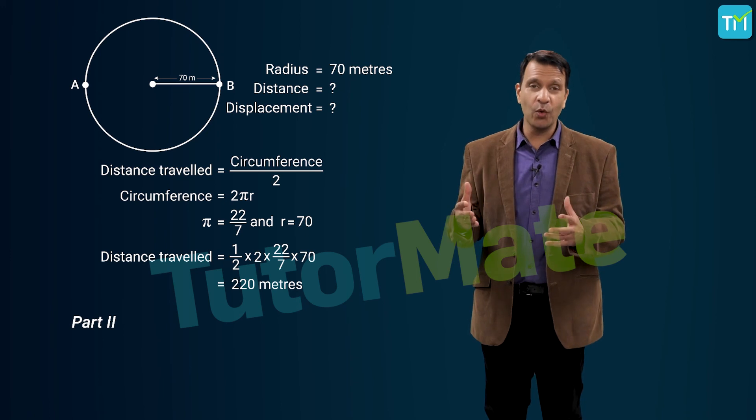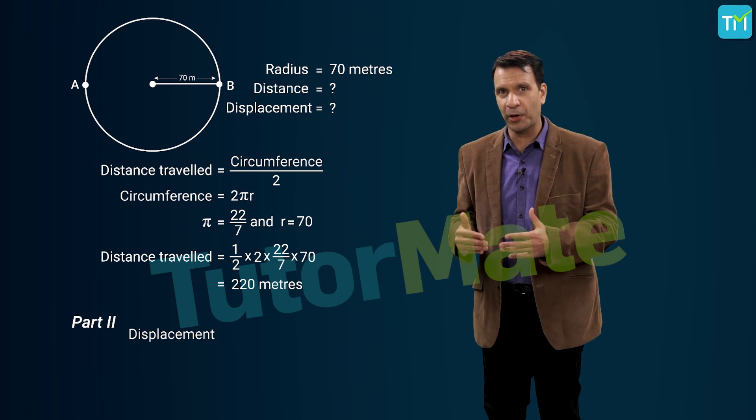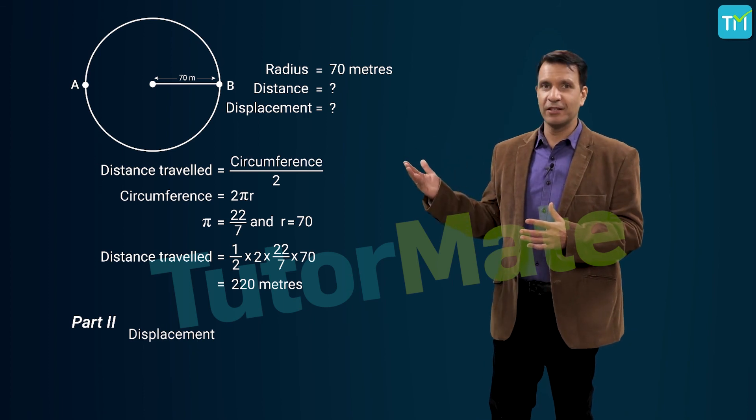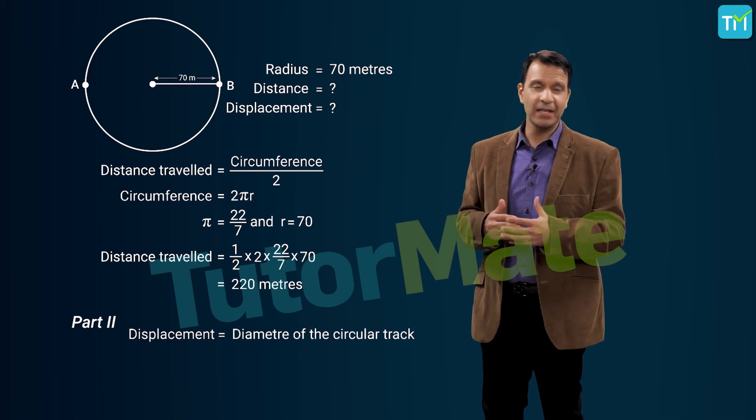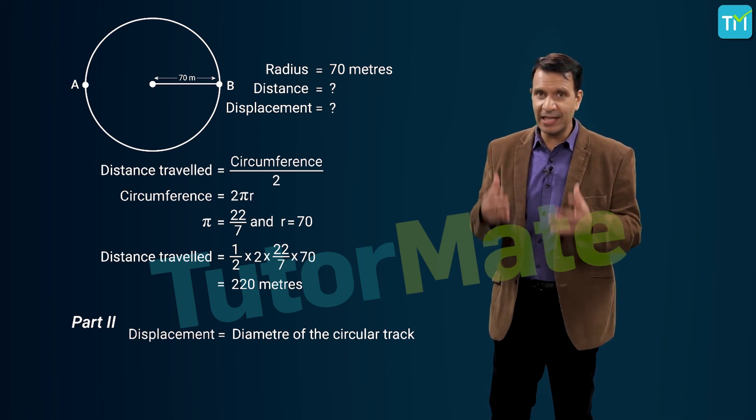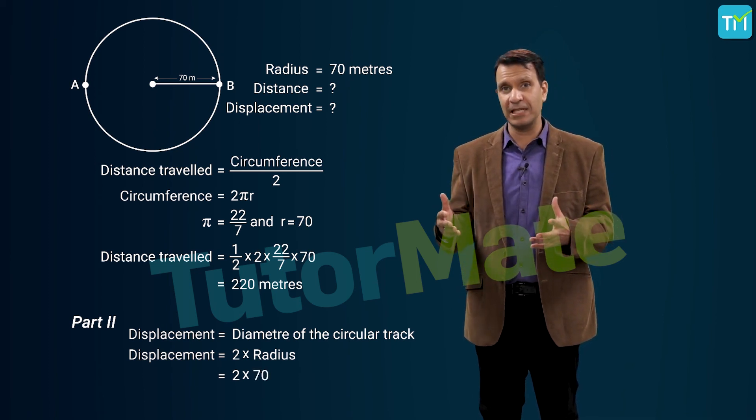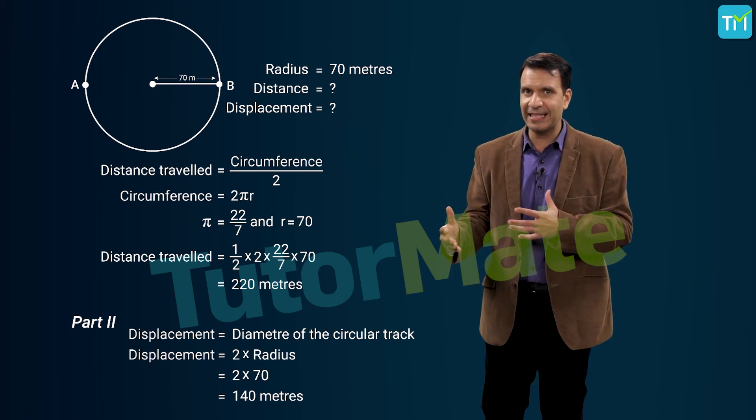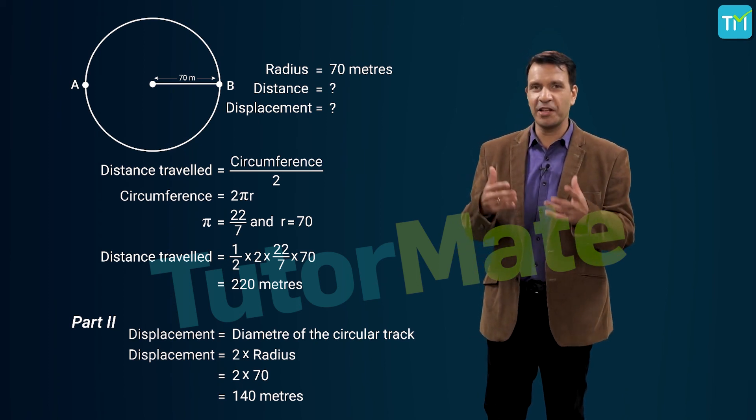Next, as we know, the displacement of the athlete is going to be the shortest distance between his initial point A and his final point B. If you observe the figure, you can conclude that this is nothing but the diameter of the circular path. The diameter of a circular path is equal to twice its radius. So we get the displacement as 2 into r, which is 2 into 70 meters, giving us 140 meters. So we get the distance traveled by the athlete as 220 meters while his displacement is 140 meters.